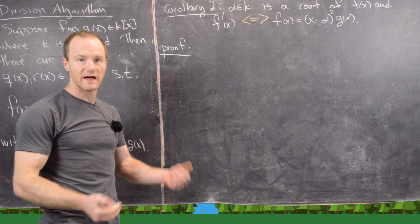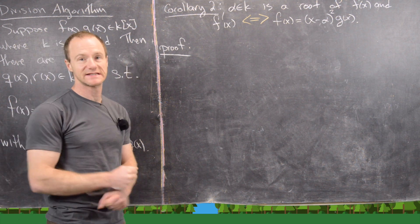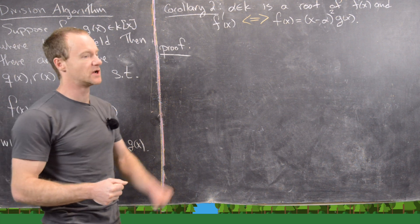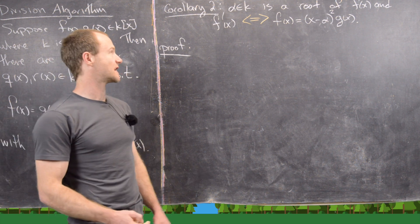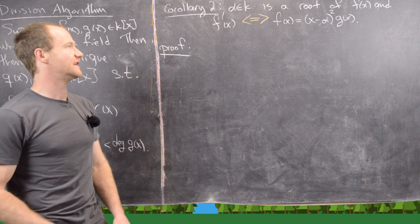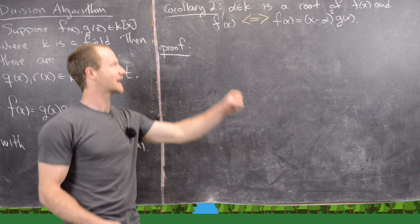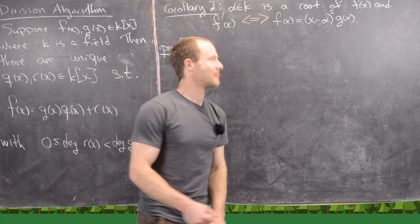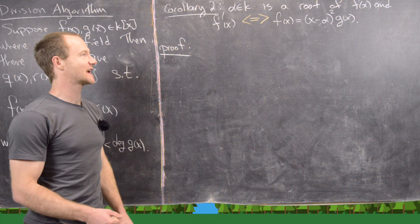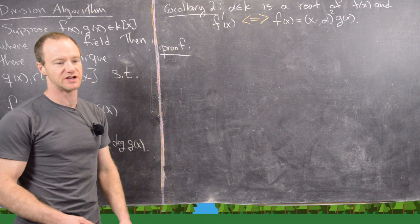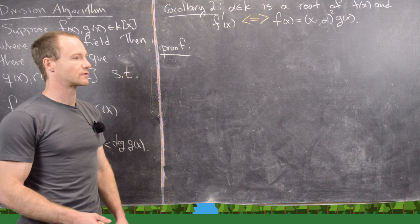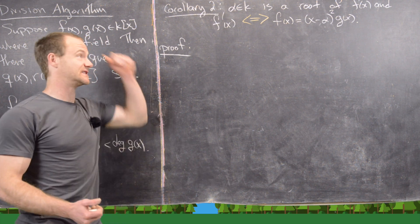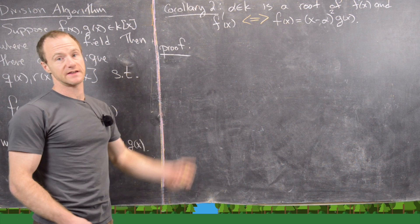Our next result is related to the previous one and is actually a special case of a very general result — a nice homework exercise. α in the field is a root of both f(x) and f′(x) if and only if f(x) can be written as (x − α)²·g(x), meaning α is a root of multiplicity 2.